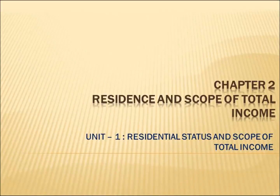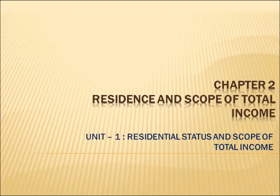Hello everyone and welcome to Edupedia World. Today we are going to continue with Unit 1 of Chapter 2, that is Residential Status and Scope of Total Income. We will discuss more examples on the determination of residential status of an assessee, and then the residential status of HUFs, AOPs, BOIs, and companies, and then we will be done with Unit 1.